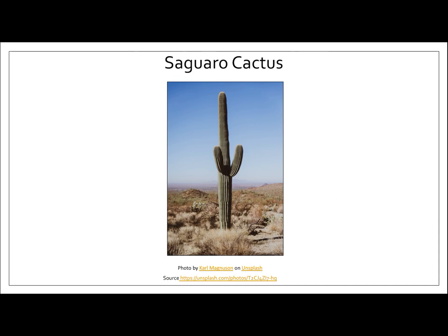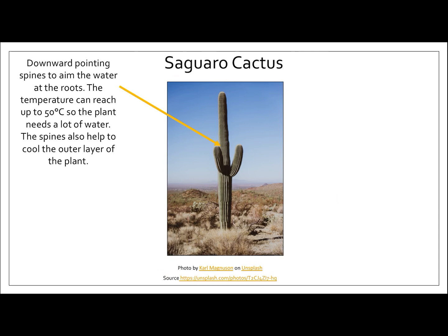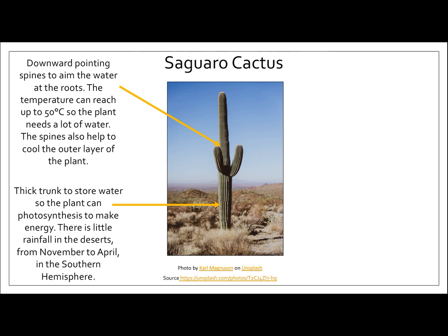Next, the saguaro cactus — quite a popular plant in Mexico, but also found in other deserts around the world. First of all, it's got downward pointing spines to aim the water at the roots. The temperature can reach up to 50 degrees, so the plant needs a lot of water. The spines also help to cool the outer layer of the plant. This plant has also got a thick trunk to store water so that the plant can photosynthesize to make energy. There is little rainfall in the deserts from November to April in the Southern Hemisphere, so it's really important that this plant has somewhere to store water.